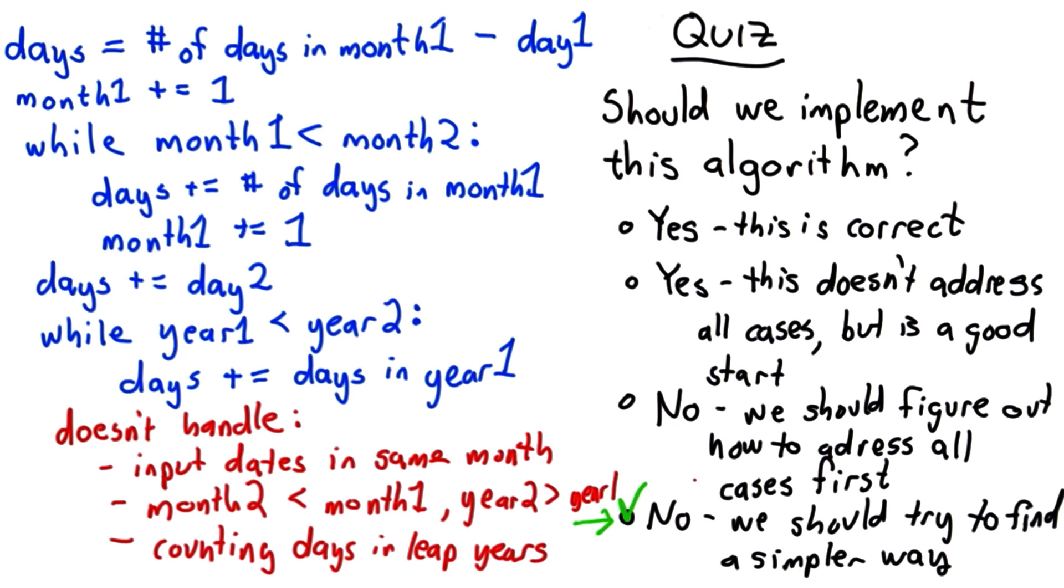But our goal as programmers should be to try to find a simple solution first. Something this complicated is very difficult to get correct. Once you start handling lots of special cases, and I've seen lots of discussions on the forum of people who tried to handle all of these special cases, it's really hard to get them all right. And it makes the code very complicated. So let's start by thinking of a simpler way.